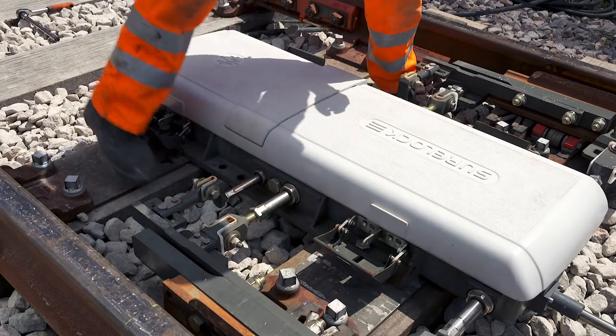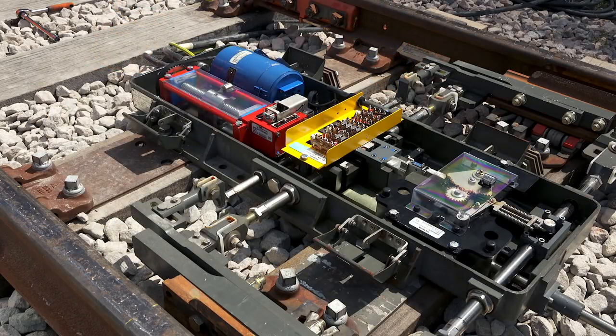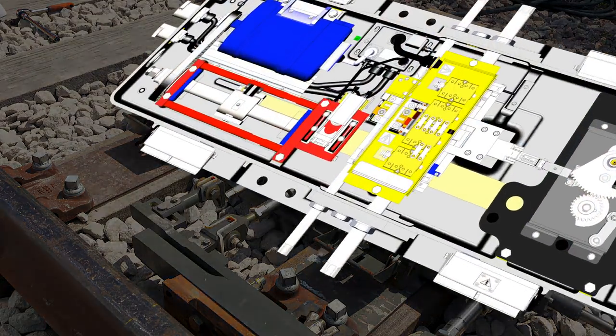Shorelock is IP67 rated and can be installed in the four foot or six foot application. The low profile casing contains four individually replaceable modules.